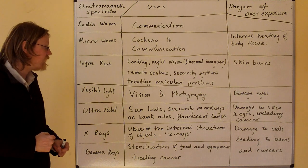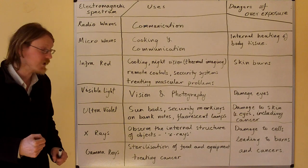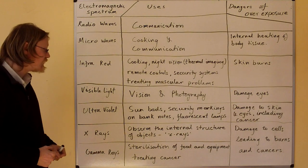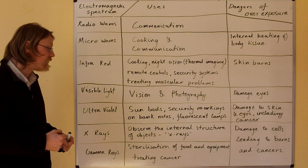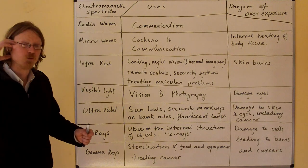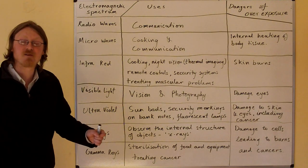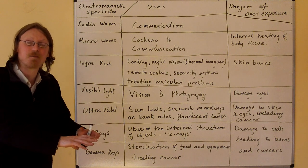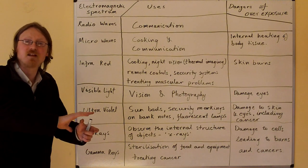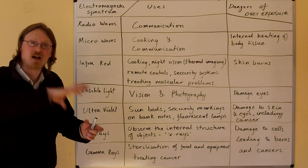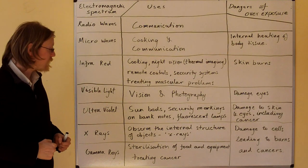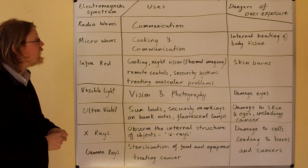X-rays are used to observe the internal structure of objects. Gamma rays are used in sterilising food and equipment and treating cancer. Gamma rays are shone through a cereal packet and any bacteria on the flakes of cereal is killed by the large dose of gamma rays, sterilising it.